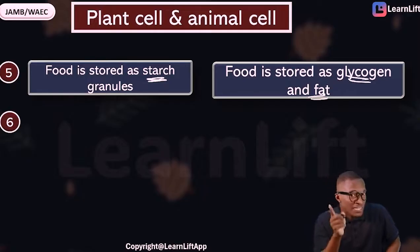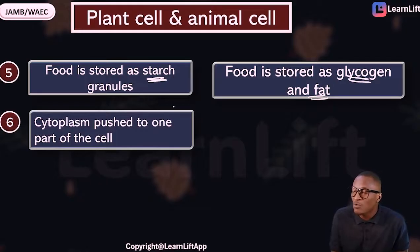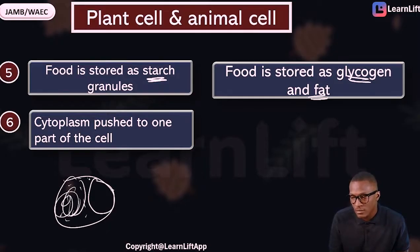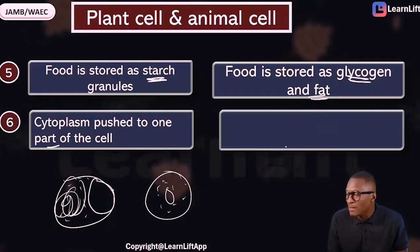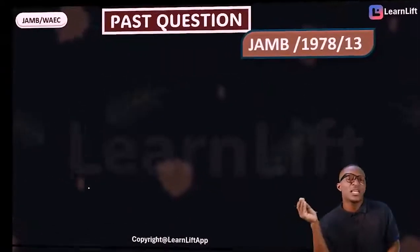Fifth, food is stored as starch in plant cells, but in animal cells food is stored as glycogen and fat. Sixth, in plant cells the cytoplasm is pushed to one side because of the large vacuole, while in animal cells the cytoplasm is distributed throughout the cell because the vacuole is absent or very small.